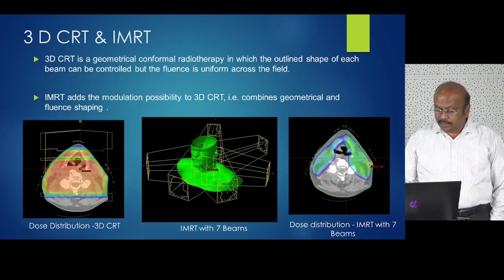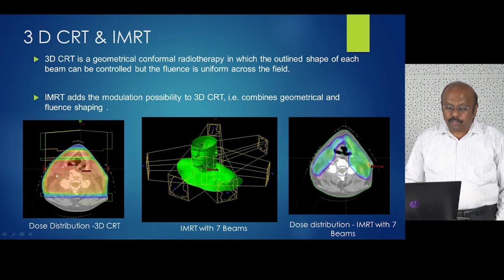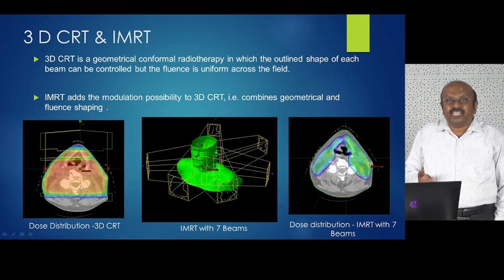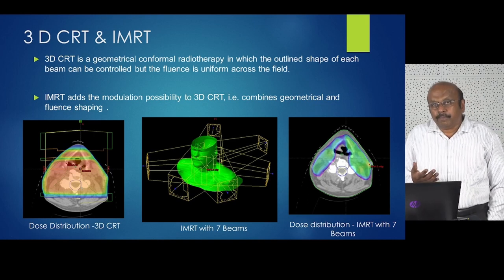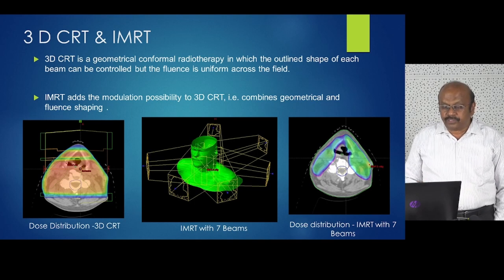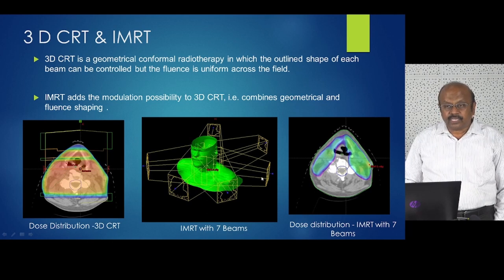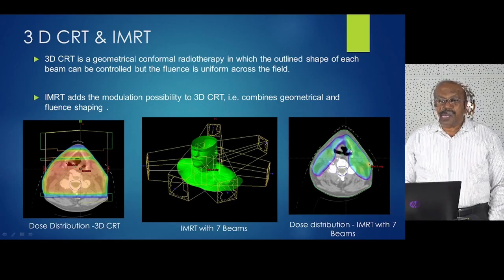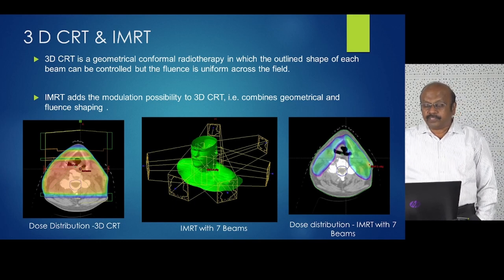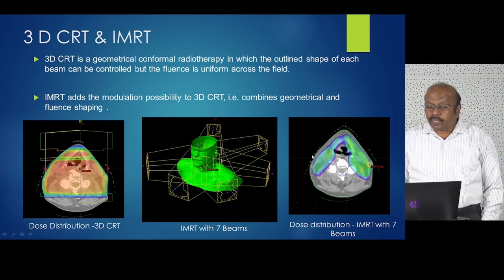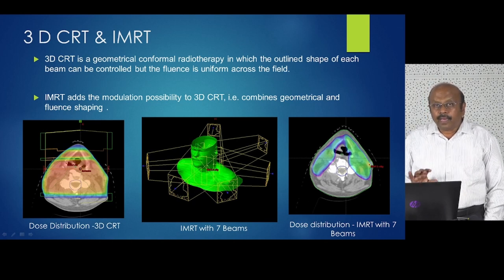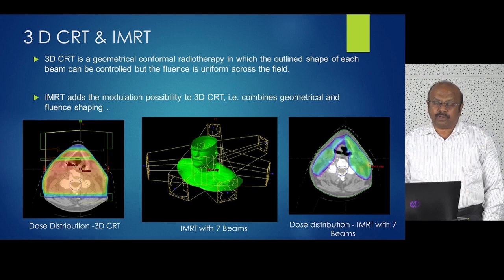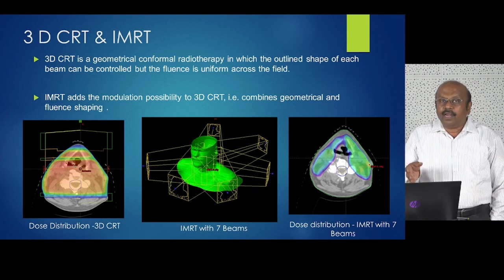If you look at this, you have a tumor volume here and here. If you do a lateral beam, you will be including most of this area where you have critical structures. Even with 3D CRT you will include some normal tissues. But when you do IMRT with seven beams, as you can see here, the critical organ is completely avoided when the dose is delivered to the tumor volume. That is the advantage of IMRT.